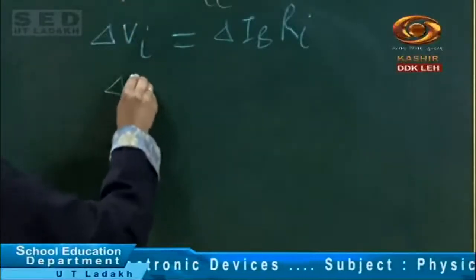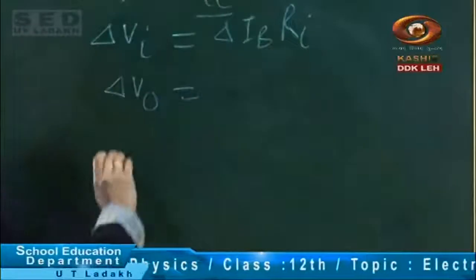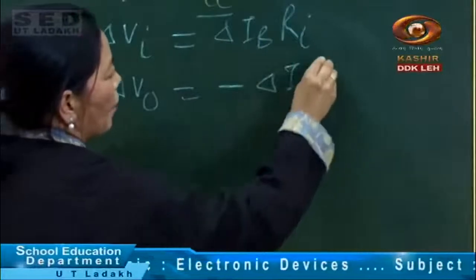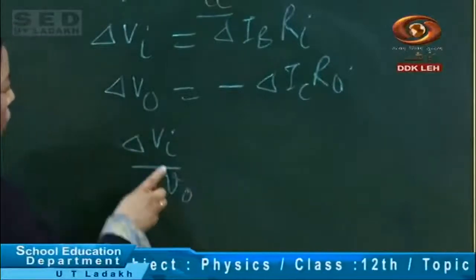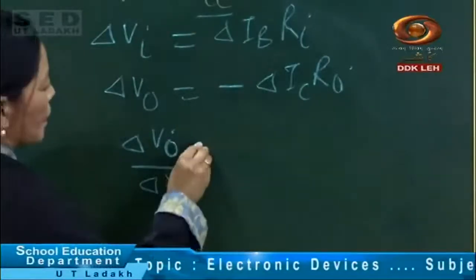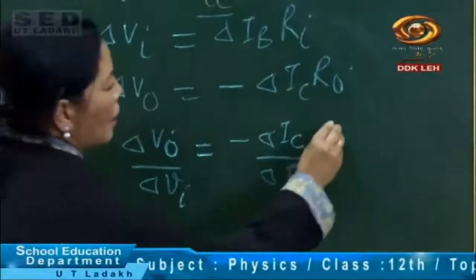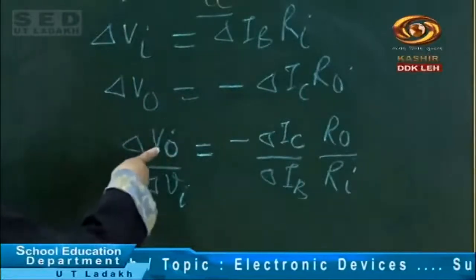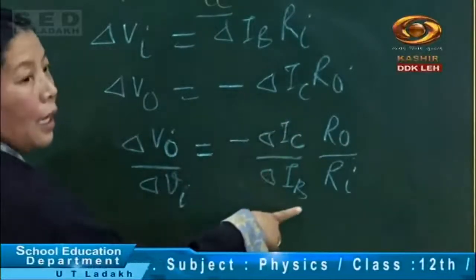Similarly, for the output side, delta V-naught is equal to VCC minus delta IC upon R-naught. VCC is the collector voltage which is also constant, so its value contributes zero. Therefore, delta VI upon delta V-naught — the change in output voltage to the change in input voltage — is equal to minus delta IC upon delta IB into R-naught upon RI.